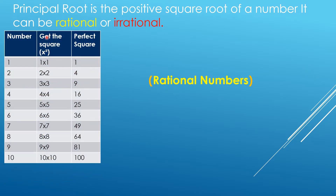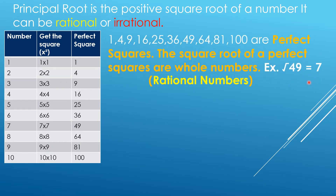So now, these are the tables for perfect squares: 1, 4, 9, 16, 25, 36, 49, 64, 81, 100. These are the perfect squares. So if we're going to get the square root — for example, the square root of 49 — that is equal to 7. These numbers, the square roots of perfect squares, are what we call rational numbers.